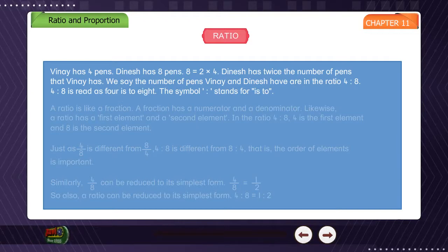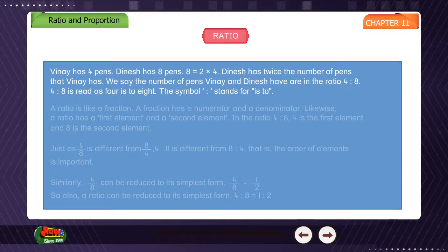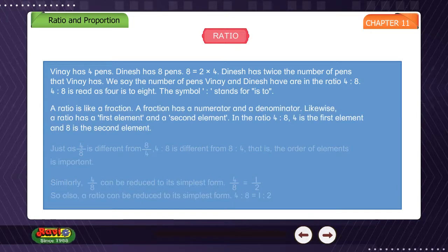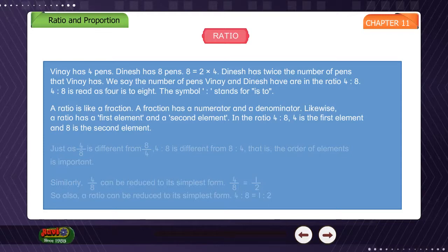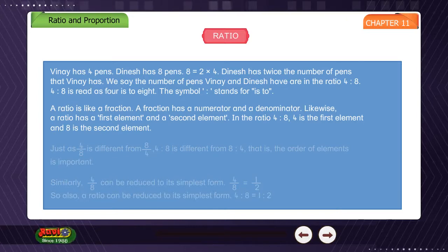4 is to 8 is read as '4 is to 8.' The symbol stands for 'is to.' The ratio is like a fraction. A fraction has a numerator and a denominator. Likewise, a ratio has a first element and a second element. In the ratio 4 is to 8, 4 is the first element and 8 is the second element.